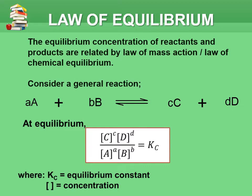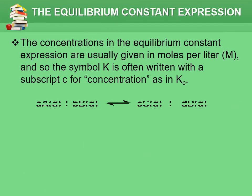In order to get the equilibrium constant Kc, we use the formula: the concentration of C to the power of c, times concentration of D to the power of d, divided by the concentration of A to the power of a, times the concentration of B to the power of b. These expressions are usually given in moles per liter, and so the symbol K is often written with a subscript C for concentration, as in Kc.